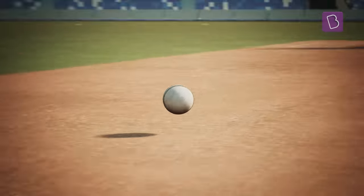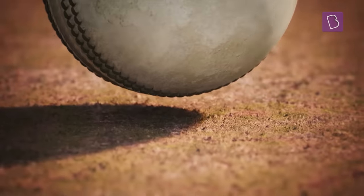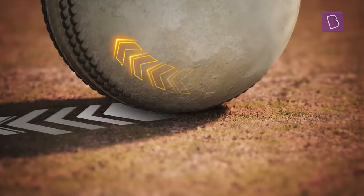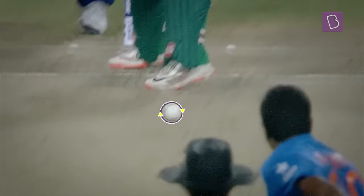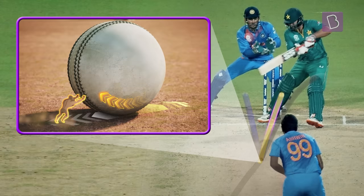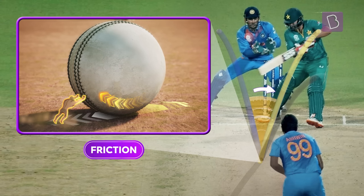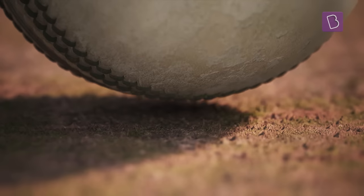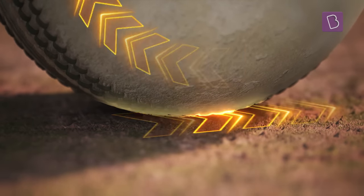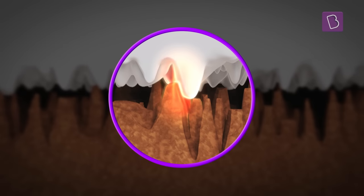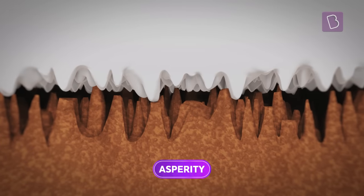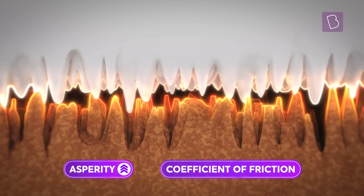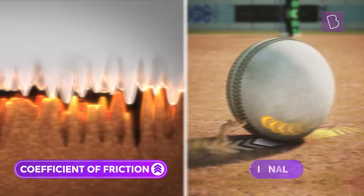Let us first look at how the ball turns. When a spinning ball makes contact with the pitch, its bottom-most point tends to slip. As a result, the pitch provides friction in the opposite direction, causing the ball to turn. But it's the magnitude of this frictional force that determines how much the ball will turn. Frictional force between two surfaces in contact is the resistance to relative motion between them. Microscopically, this resistance is caused by the interlocking of surface irregularities, or asperity. As the size and number of these irregularities increases, the coefficient of friction between the surfaces is set to increase, resulting in higher frictional force.